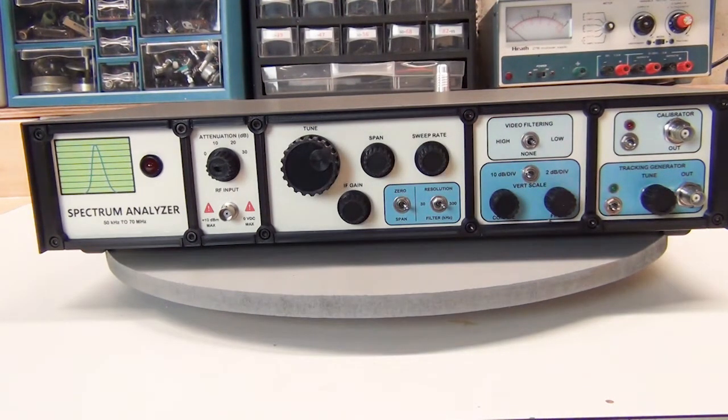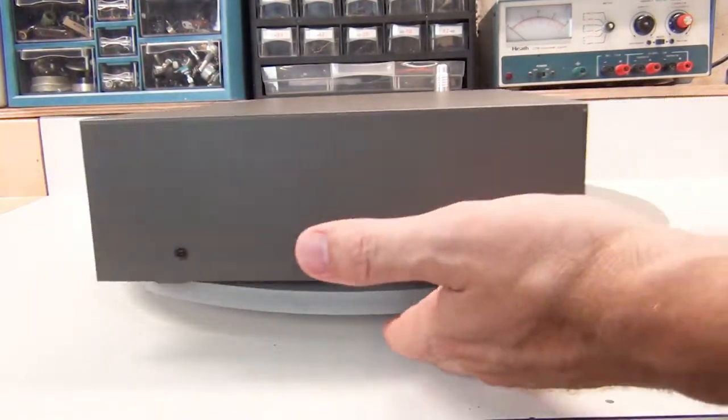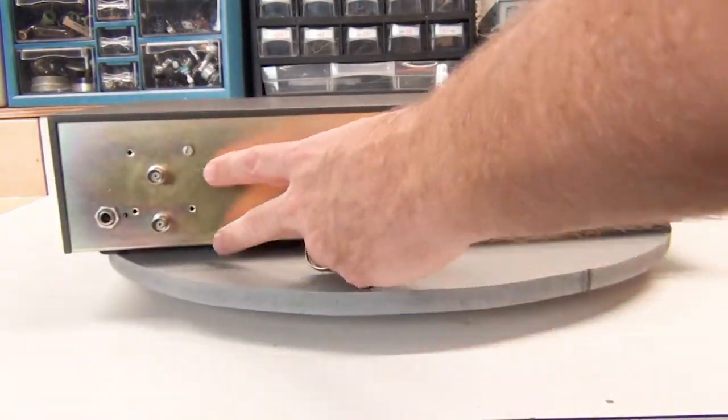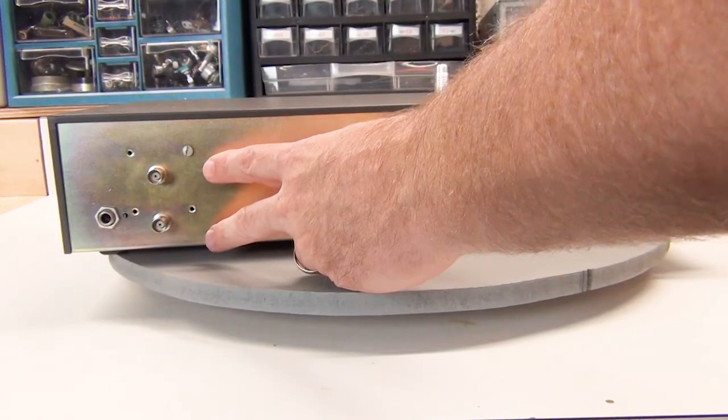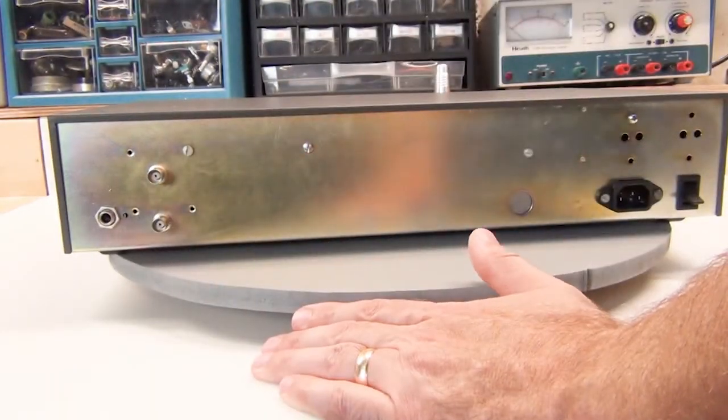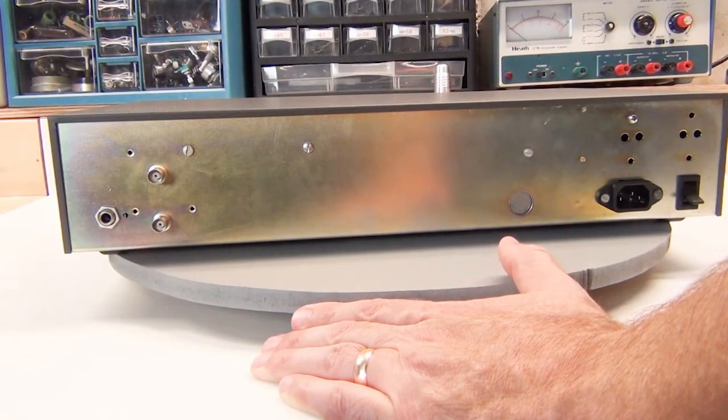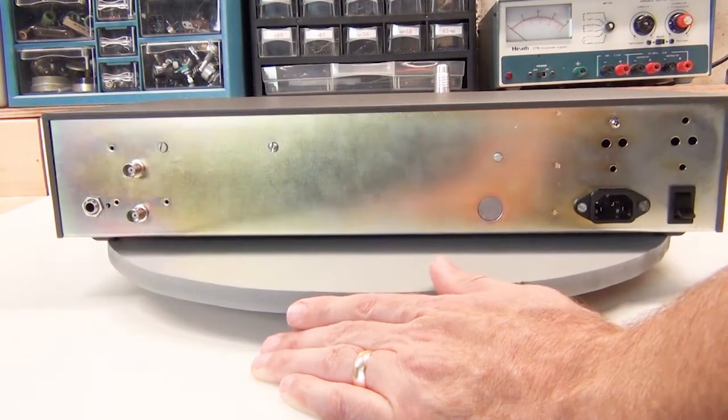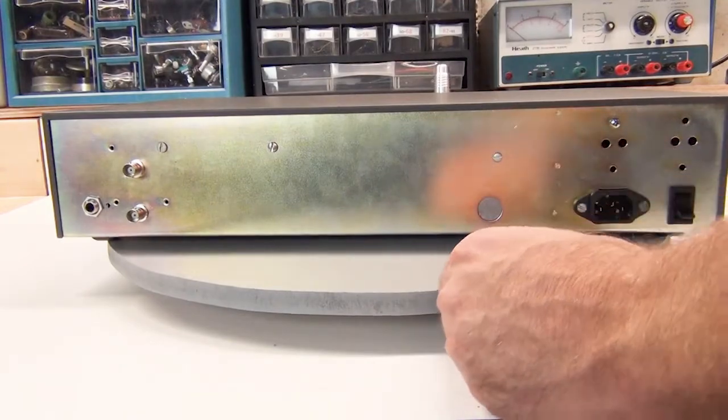I'll spin the turntable around at this point so we can take a look at the back. And it is pretty simple. There's just two BNC connectors here, one for x-axis and y-axis to connect to the oscilloscope. There's a potentiometer there that is adjusted during calibration to set the final gain of the amplifier. And then of course power and power switch.